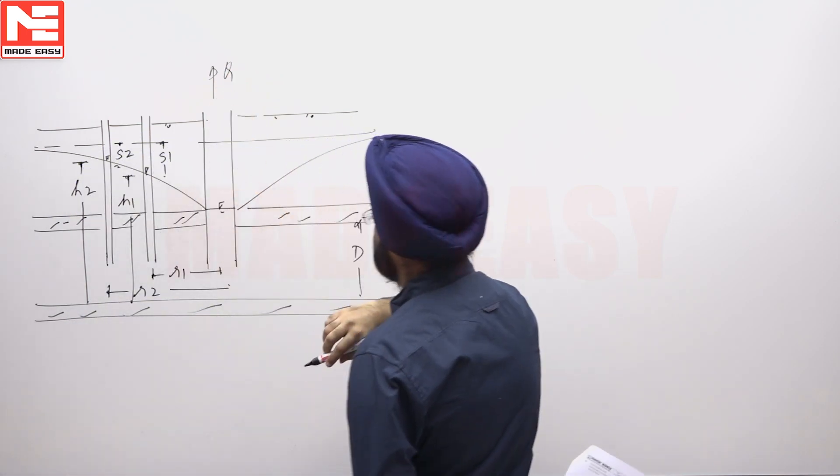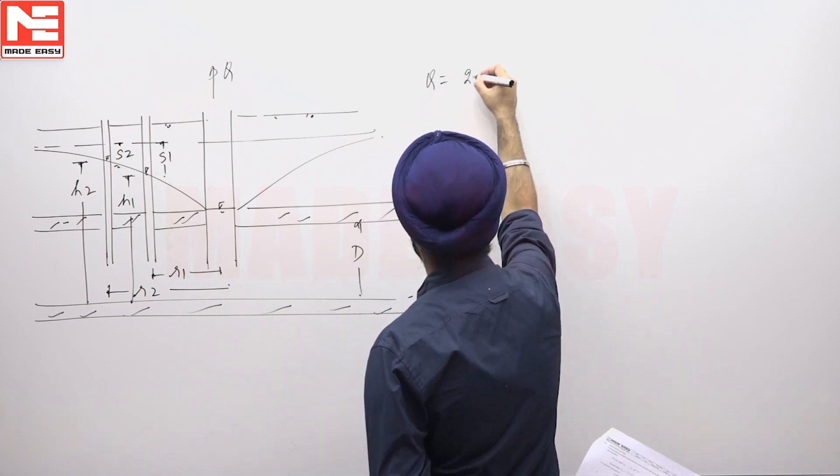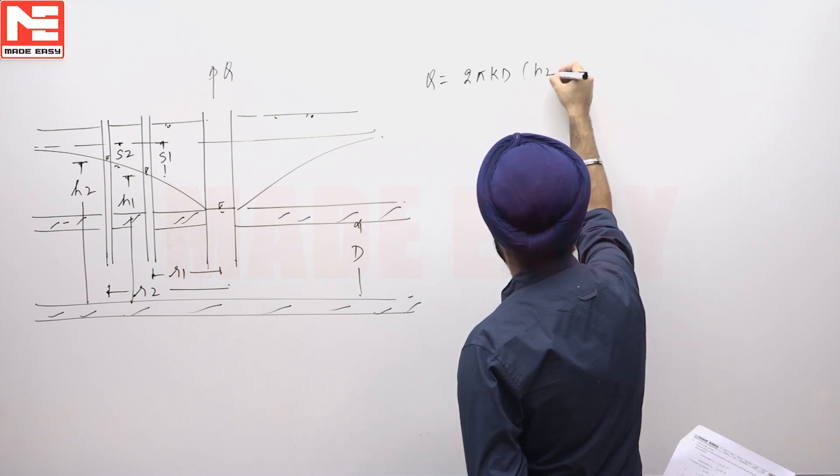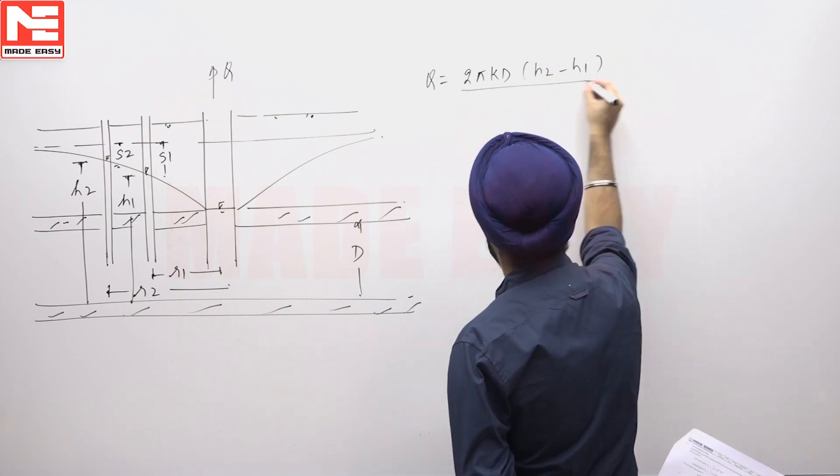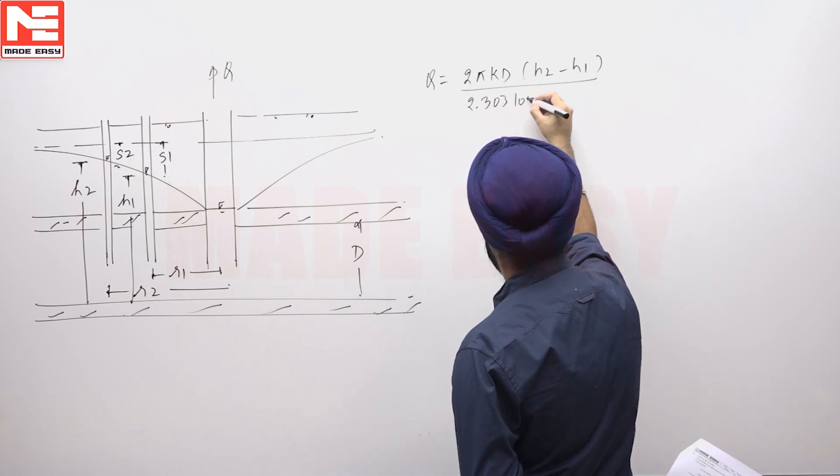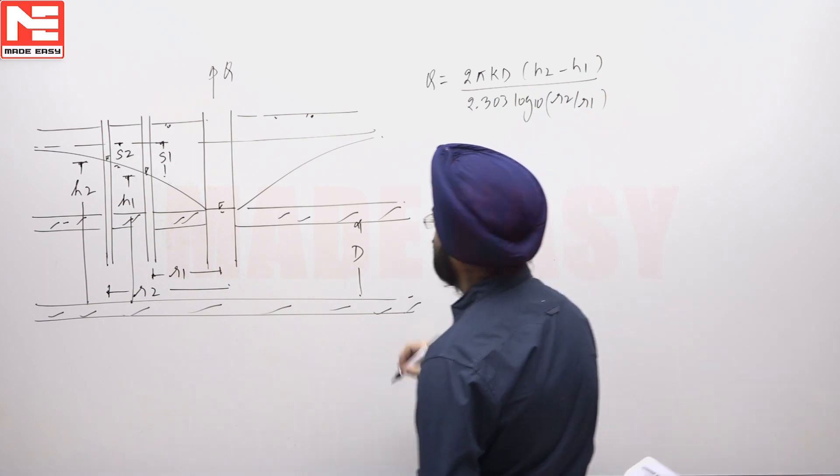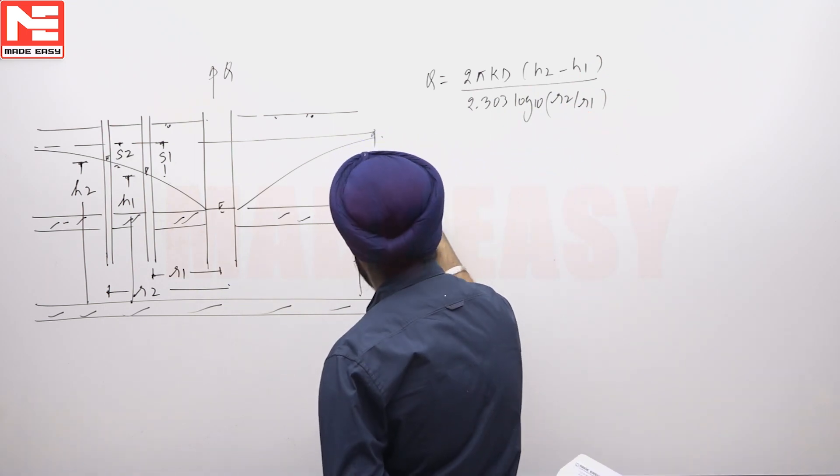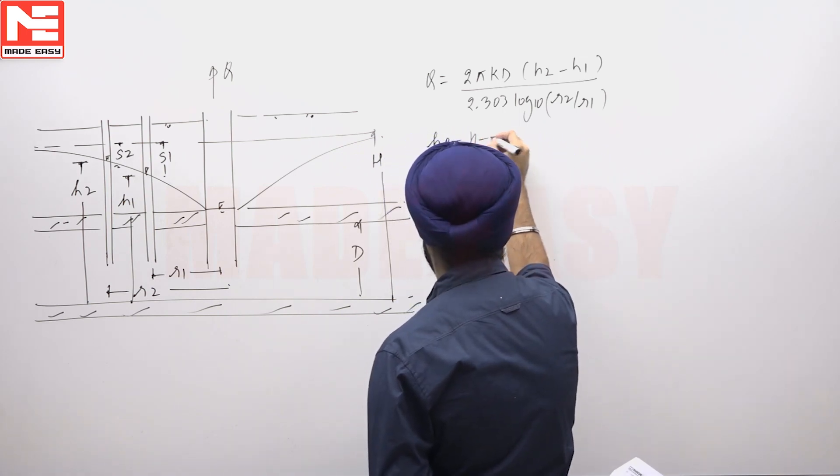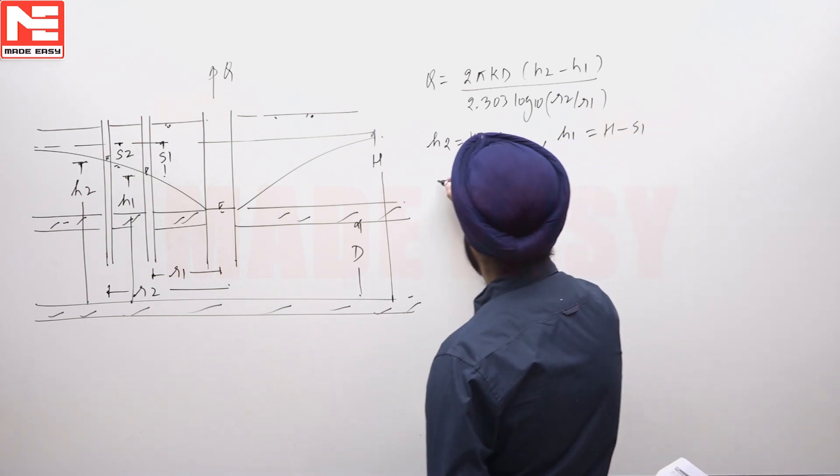Discharge from the tube well pumping water from confined aquifer is given by Q = 2πKd(H2 - H1) divided by 2.303 log₁₀(R2/R1). Let us suppose the height of the water table above the bottom of the well is capital H. So we can say H2 equals capital H minus S2. Similarly, H1 equals capital H minus S1.